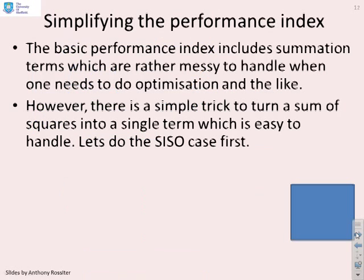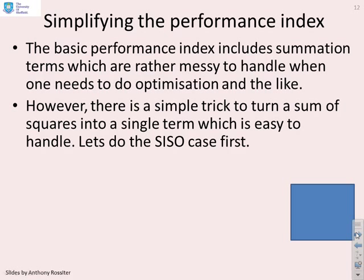Okay, what about the performance index? The basic performance index includes a summation of terms, which are rather messy to handle when you need to do an optimization. So, what we want to do is make this look a bit simpler and so we can see the dependence on the degrees of freedom. Now, there exists a simple mathematical trick to turn a sum of squares into a single term, which is easy to handle. We're going to illustrate that here.